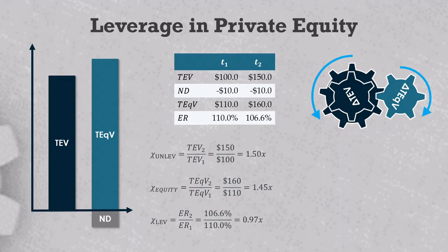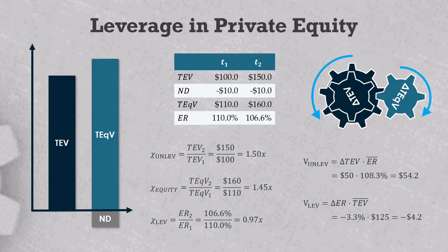Plugging these values into the derivative model gives you an unlevered return that's 4.2 million higher than the total equity return of 50, and this is offset by a negative leverage effect of minus 4.2 million.